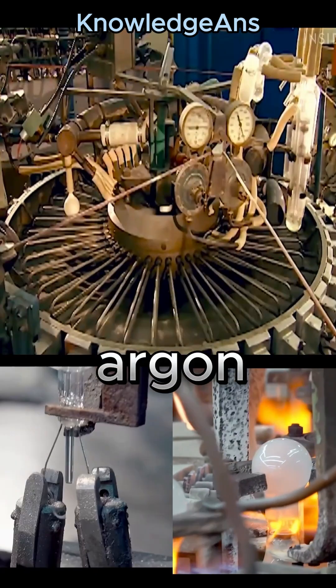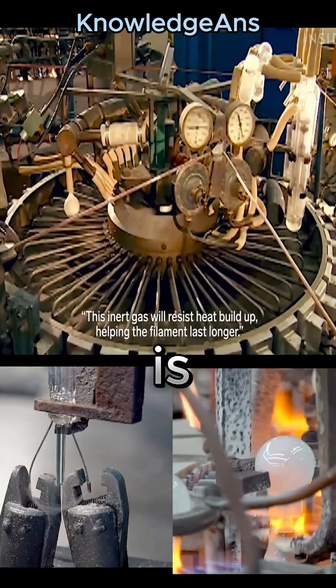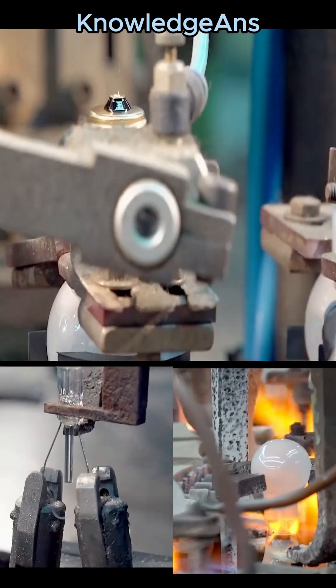The lamp is then filled with argon gas. It is a special gas that slows the evaporation of the tungsten filament, which is a poor conductor of heat and makes the lamp less hot.